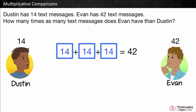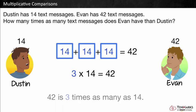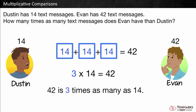This means that Evan has three times as many text messages as Dustin. We can write this as a number sentence. Three times 14 equals 42. Or, 42 is three times as many as 14.